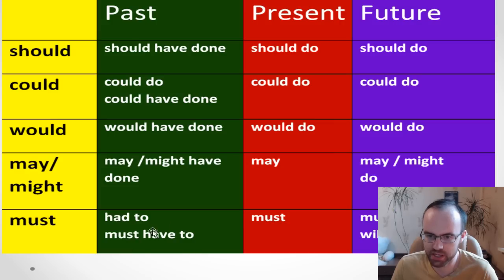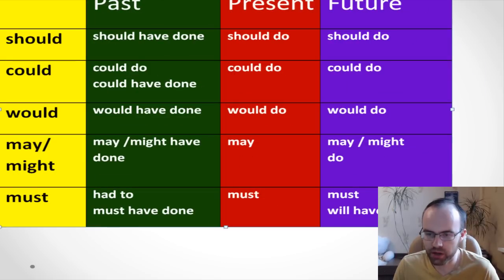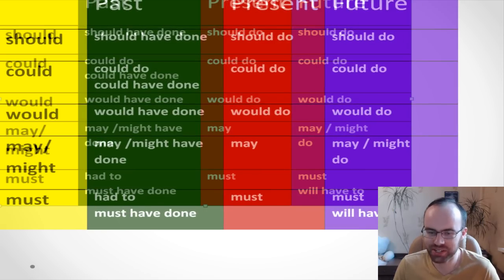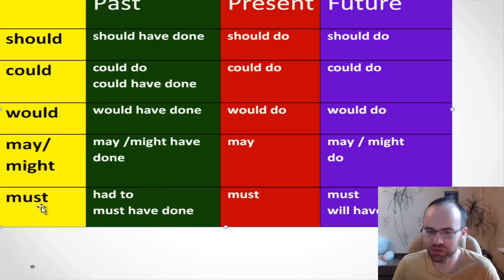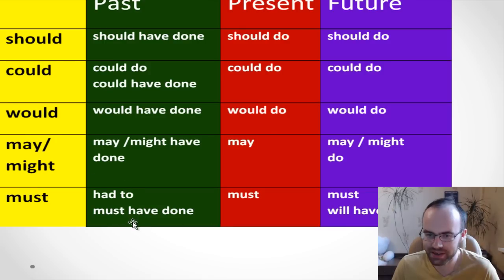There was a mistake on the table — not 'must have to' but rather 'will have to,' and separately 'must have done.' The difference: we say 'had to' for a past obligation that actually happened, and 'must have done' for something else entirely. For example: 'must have done' — this is what we have here.